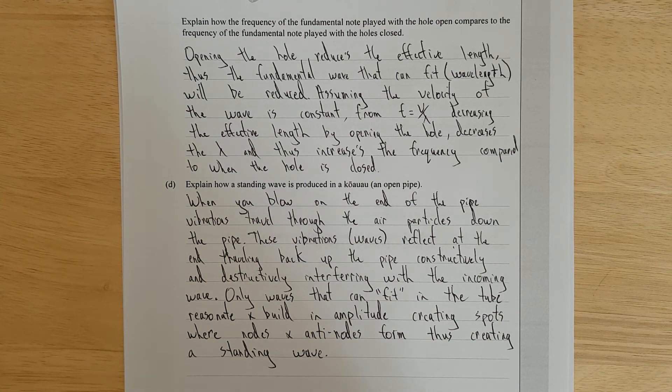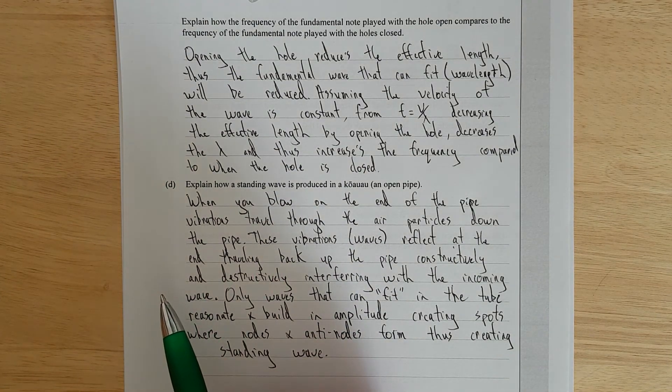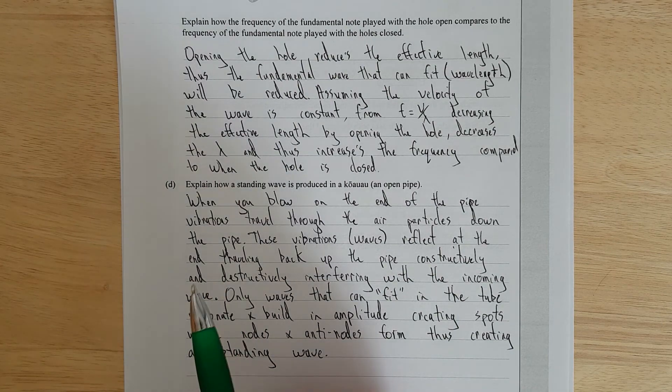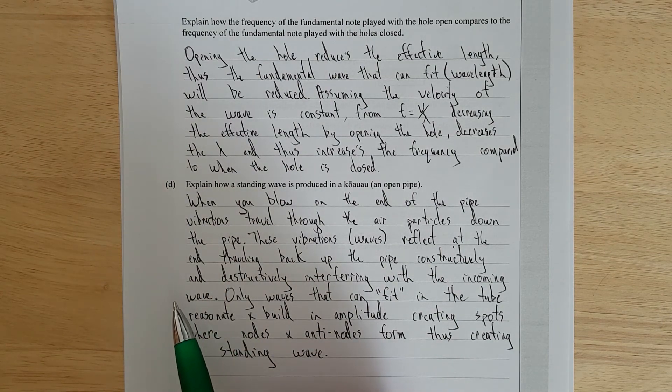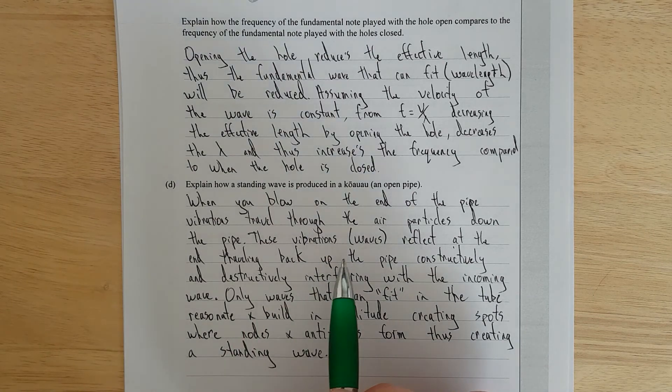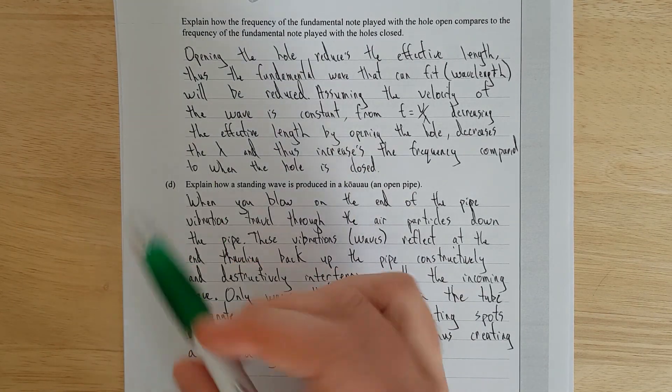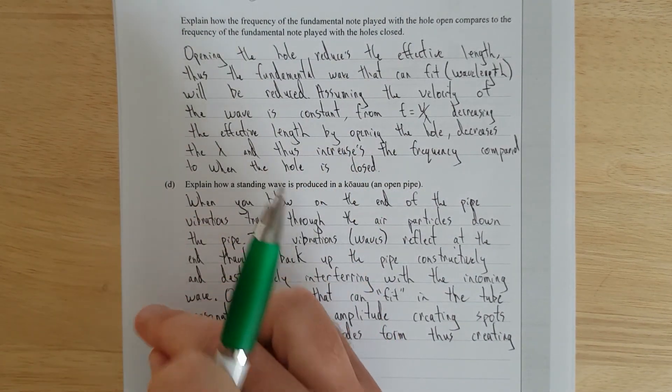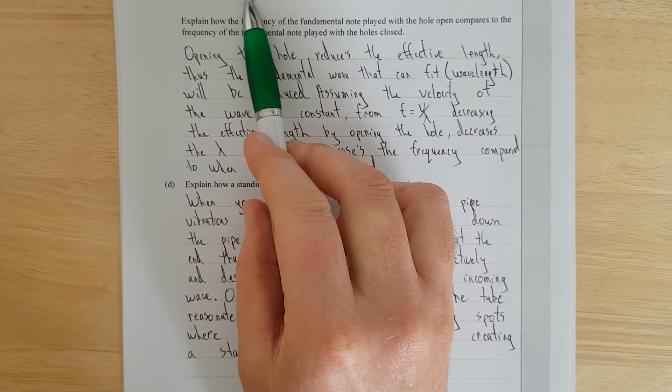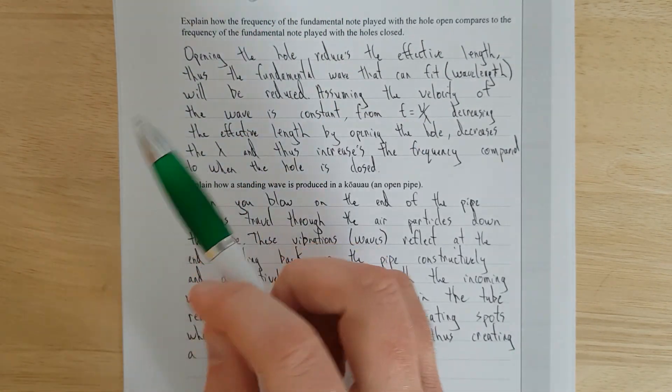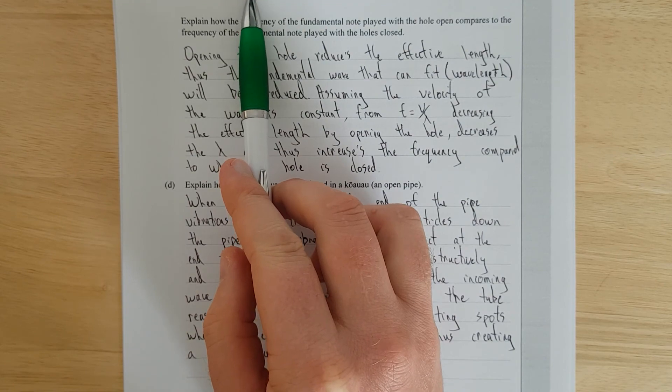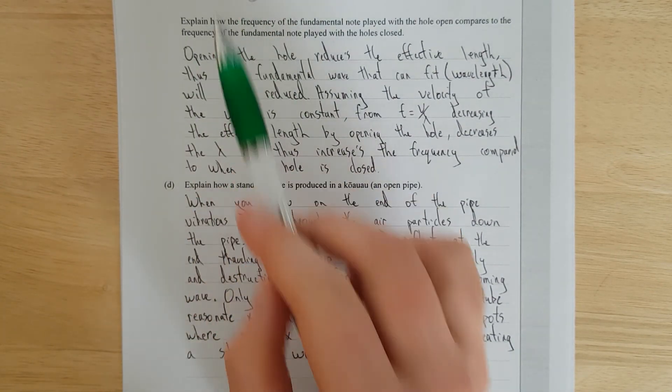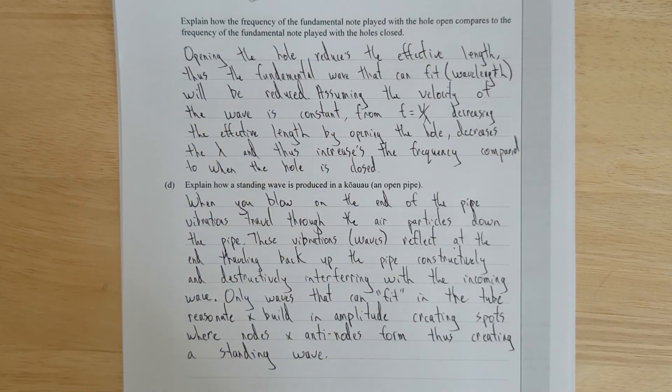One thing I actually never really thought about, or like a little tidbit, is that when you have anti-nodes at the end of a pipe, it's where there's no phase change, because if there was a phase inversion, when it reflected, the wave flipped, you'd have the wave coming in being up, and the wave coming back, or reflecting back being down, so you'd get superposition, that add together to give nothing, which gives a node. So because these anti-nodes at the end of these pipes, it means the waves don't actually change phase or invert, which is a cool little tidbit.